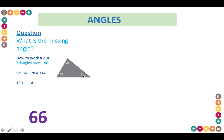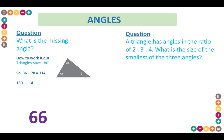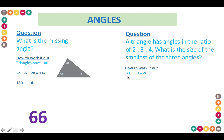Another question on angles — this is slightly different but requires the same logic. A triangle has angles in the ratio of 2 to 3 to 4. What is the size of the smallest of the three angles? You know there are 180 degrees in a triangle. Add up the ratios: 4 plus 3 plus 2 gives 9. Divide 180 by 9, which gives you 20.